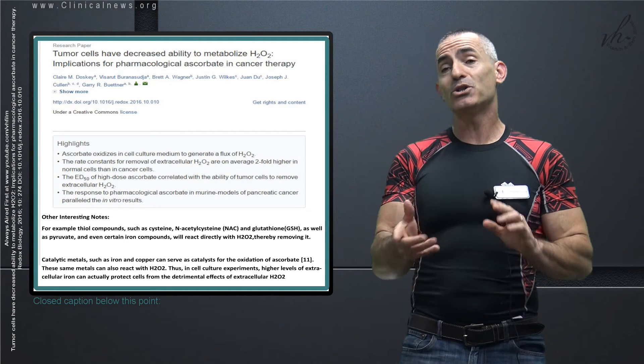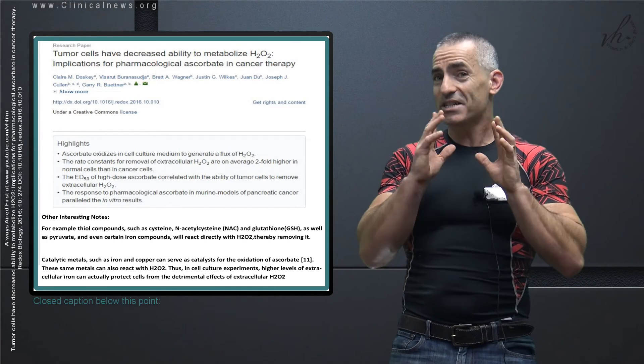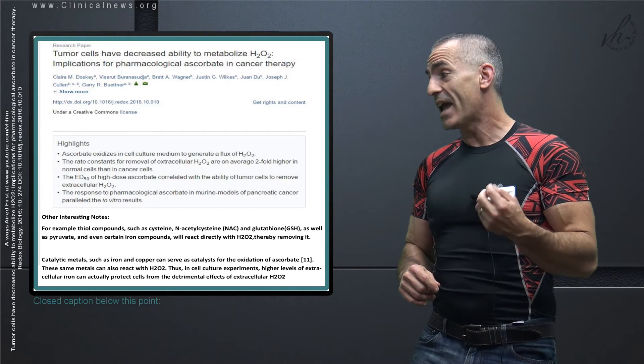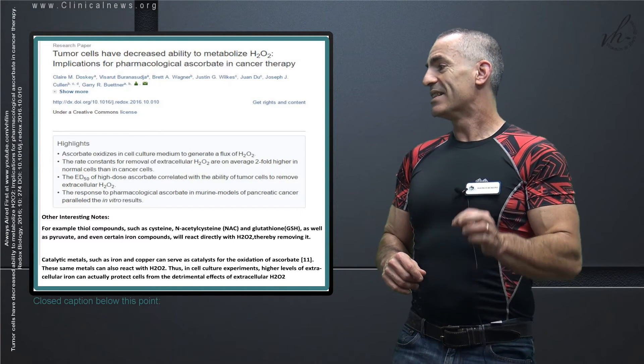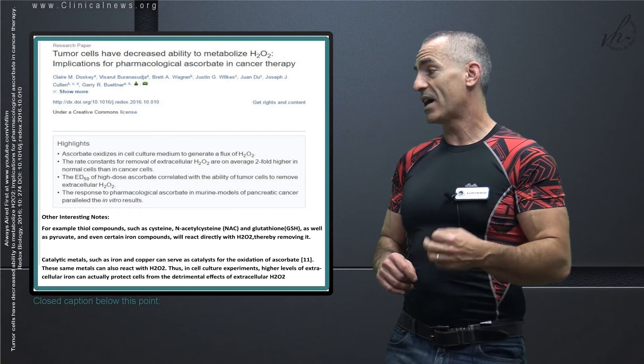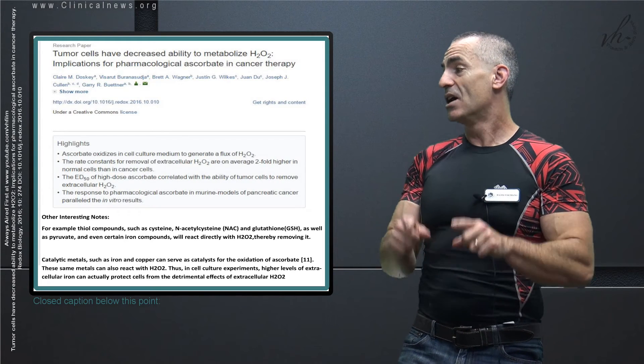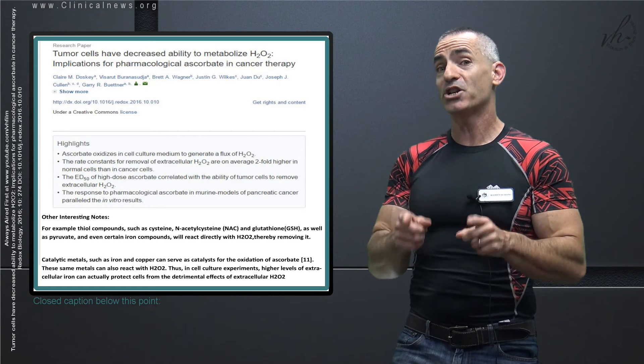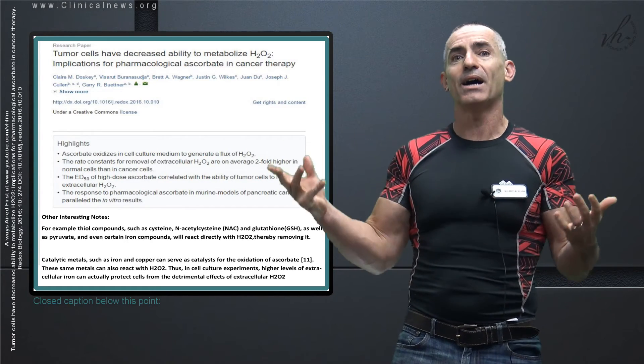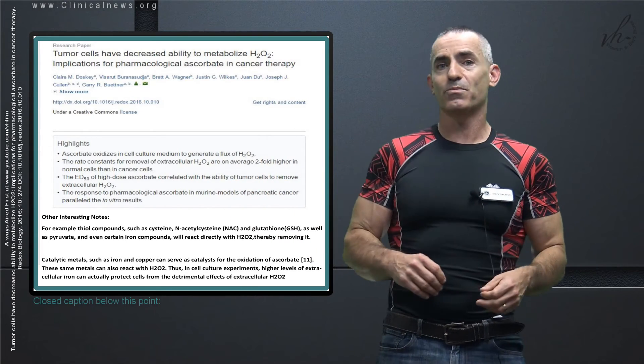Now an interesting thing too is because you think iron and vitamin C or iron and copper could be a reactive species. But check this out. Catalytic metals such as iron and copper can serve as catalysts for the oxidation of ascorbate. The same metals can also react with H2O2. Thus, in cell culture experiments, higher levels of extracellular iron can actually protect cells from the detrimental effects of extracellular H2O2, which is just an amazing paradox in regard to iron and vitamin C, or hydrogen peroxide.